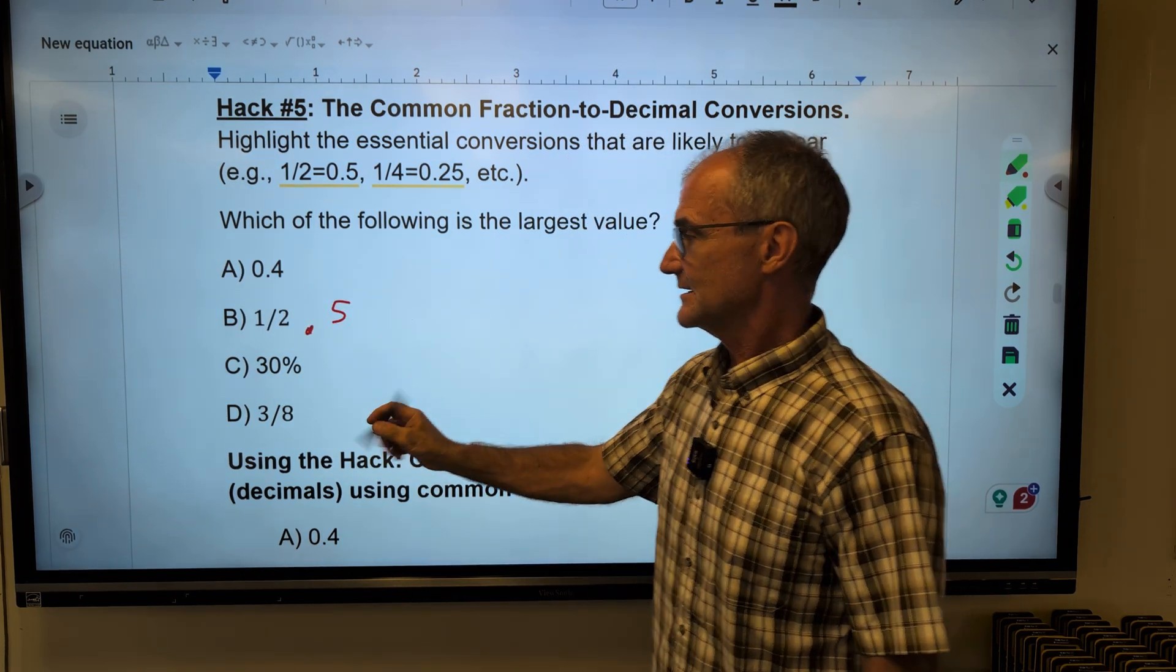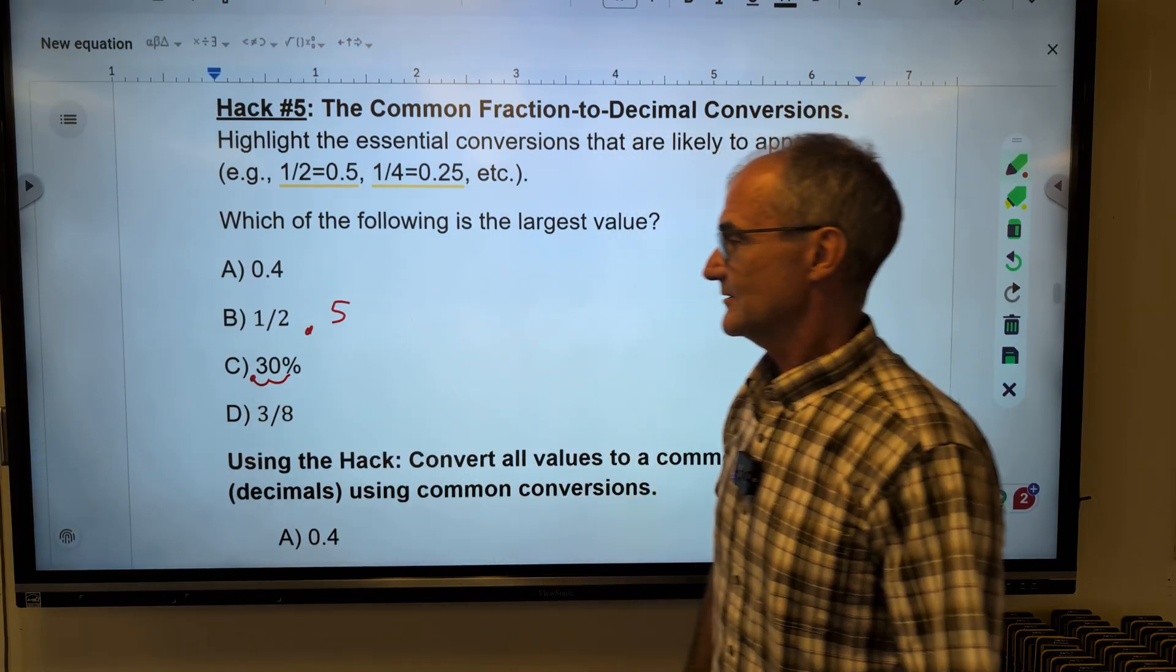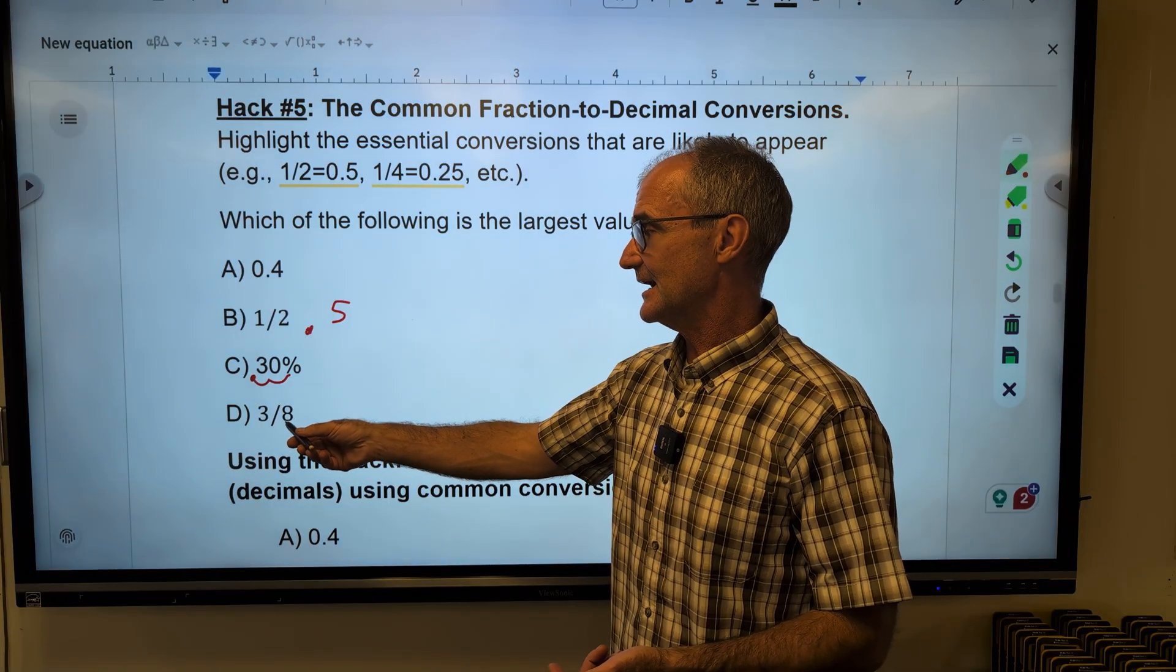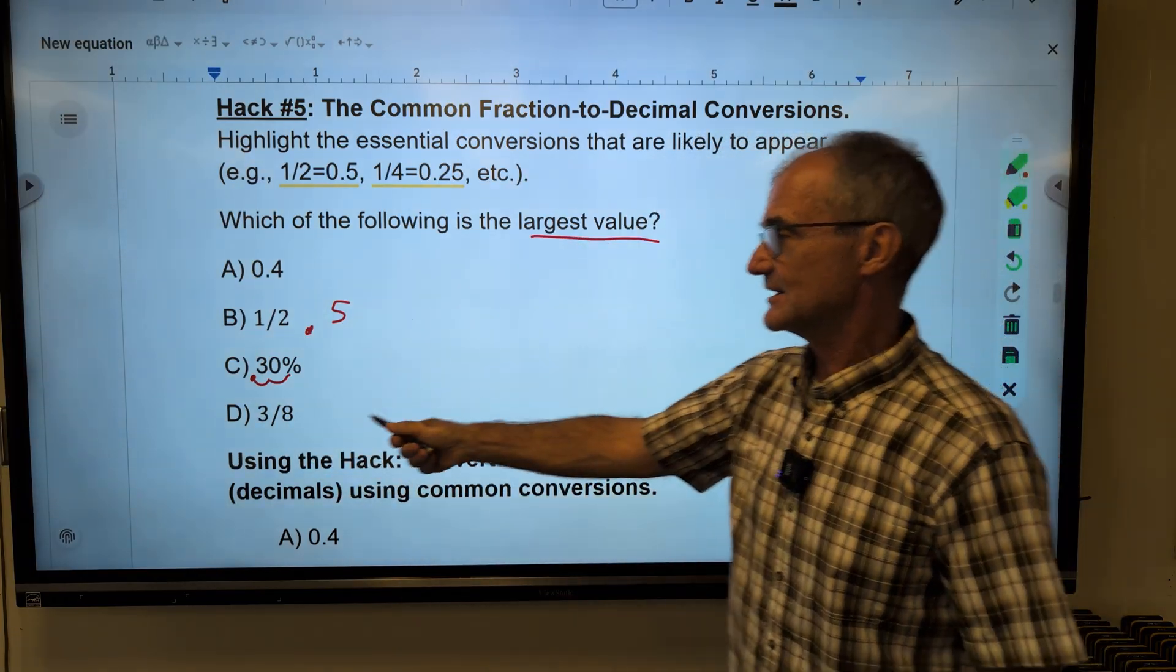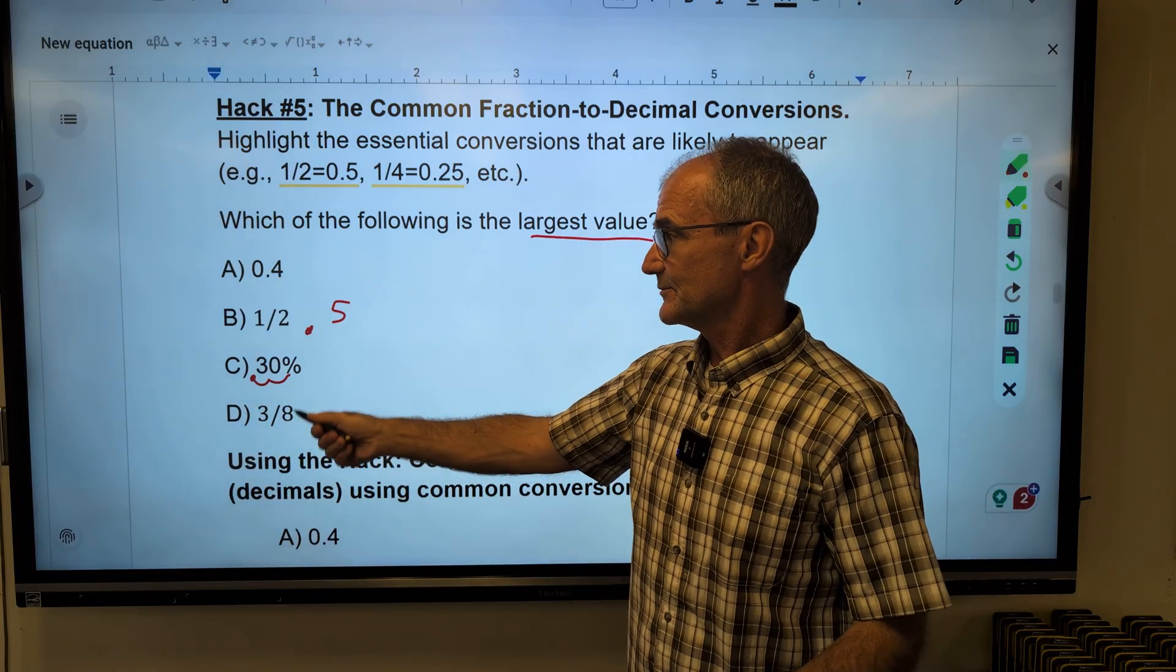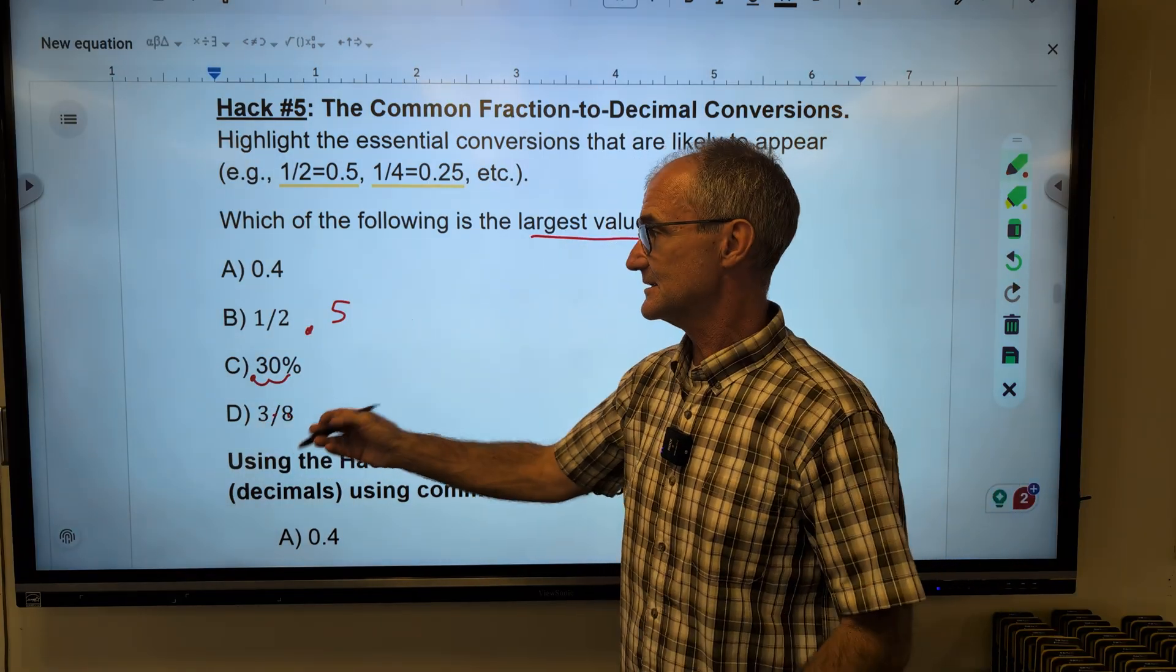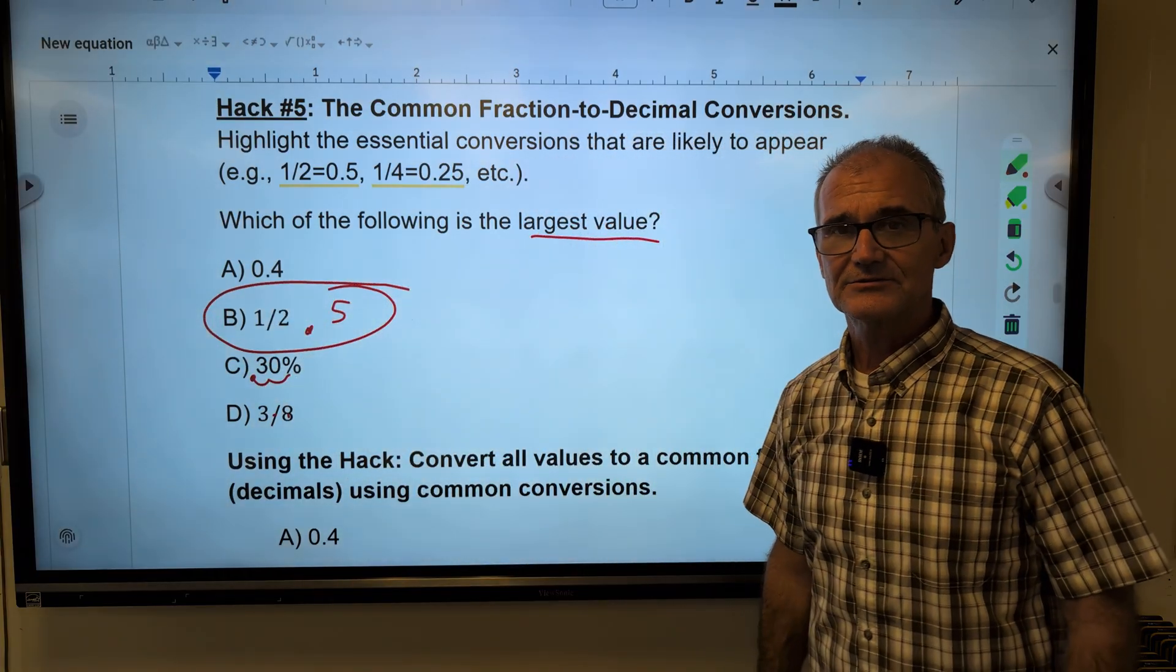30% goes over 1, 2, 0.3. Three eights, well, four eights is a half. Three eights is less than a half. So I'm looking for the largest value. I don't have to calculate that one out because I know that four eights is a half. Three eights is less than it. So the largest one has to be answer B right there.